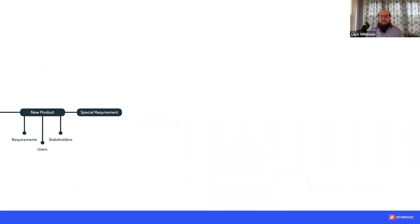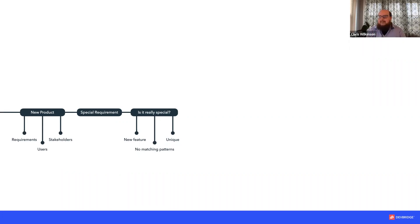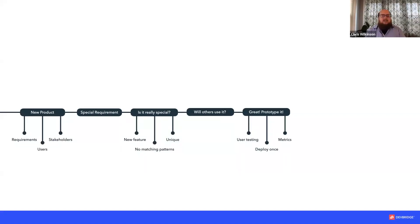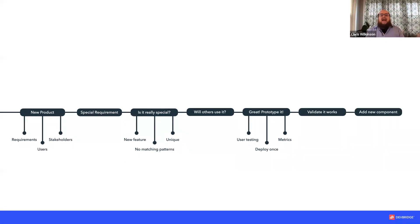Let's go back to the start and see how to do this differently. A new product comes in with a special requirement — let's break it down. Is it really a new feature? Does it fail to follow any matching pattern already in the design system? Is it truly a unique use case? If all those things are true, have a conversation about whether others will use it. If it's going to be integrated, each new component should be prototyped with a complete cycle of user testing, metrics, and ideally deployed at least once into a production environment before being promoted into the design system.